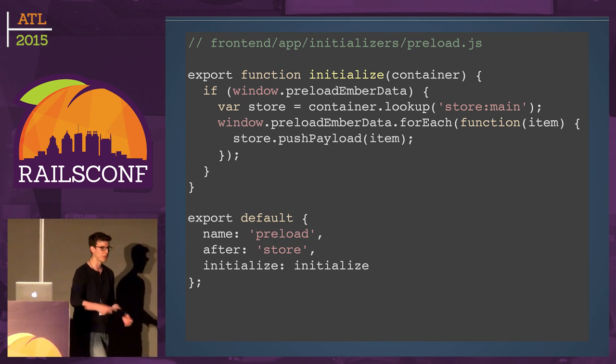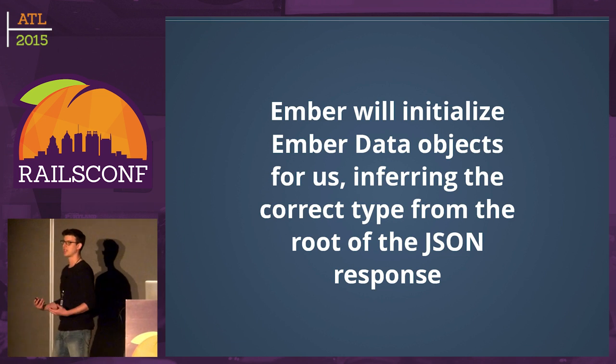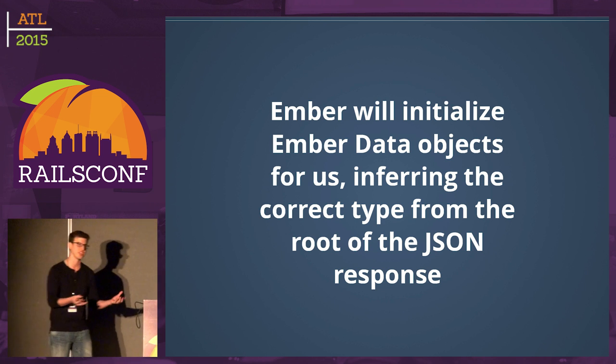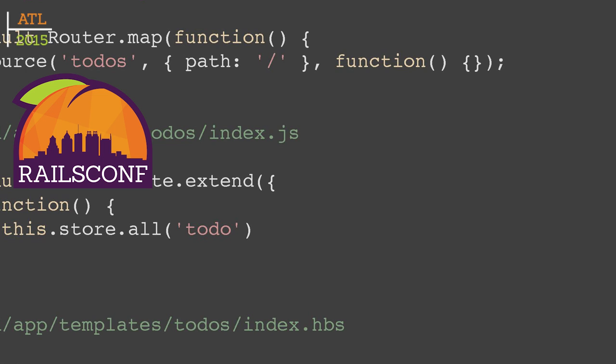The initializer lives at /initializers/preload.js. Just like Rails, you can set up initializers in Ember. On initialization, after the Ember Data store has instantiated, we iterate through the window object and push data into the store. This loads everything up at initialization. Ember Data will infer — based on the root element 'todos' — to push all records into the Todo model. Now it's all there, no extra calls needed. We set up our router, and instead of this.store.find('todo') — which would make an API call — we just query the cache.